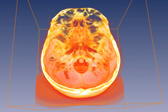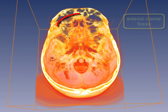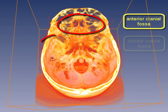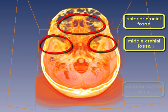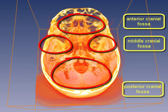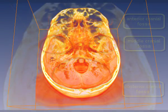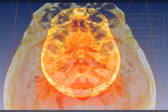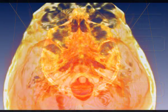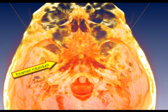The interior of the skull has three levels: the anterior, the middle, and the posterior cranial fossa. The brain is in contact with the outer world via blood vessels and nerves that run through openings in the skull base.